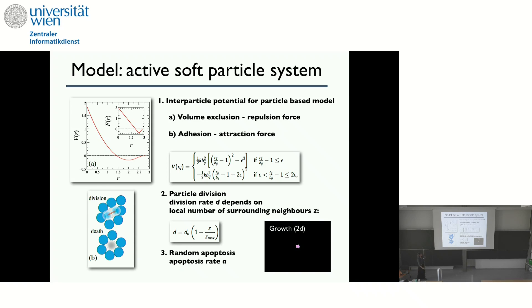And so what we did is to look at a particle-based simulation. So this particle-based simulation includes potentials that feature volume exclusion and adhesion. And then we also introduce particle division that is dependent on the number of surrounding neighbors and the random apoptosis, so random death of particles. And here you see an example of the growth of such a 2D system. And depending on the parameters in the model, you can make sure that you grow something that looks a bit like epithelial tissue.